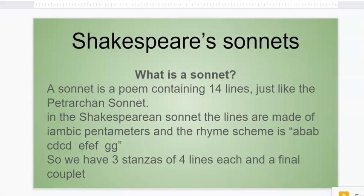In the Shakespearean sonnet, the lines are made of iambic pentameters, and the rhyme scheme is constant. It is ABAB, CDCD, EFEF, GG. So you see that we have three stanzas of four lines, and a final couplet.